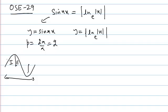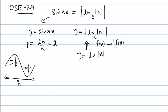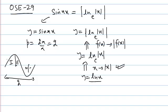The principal cycle covers all four quadrants over an interval of 2, and we can easily draw it. For the graph of |ln|x||, we apply transformations. We start with ln(x), then replace x by |x| to get ln|x|, and then take the modulus of the whole function to get |ln|x||.